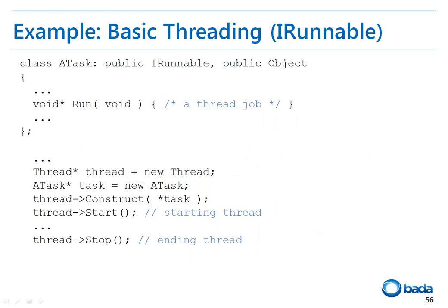So let's look at how to create an actual thread. First, I'll show you how to create a thread using IRunnable. The sub-class of IRunnable has been specified in the atask class and the run function has been implemented. You can directly specify the operation that should be performed by the thread in the run function.